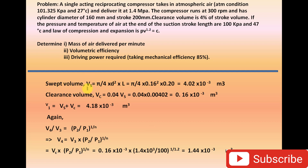The stroke volume Vs equals π/4 times D squared times L. Putting D = 0.16 m and L = 0.2 m and solving, we get Vs = 4.02 × 10⁻³ m³. Clearance volume Vc equals 4% of stroke volume, so Vc = 0.04 × Vs = 0.16 × 10⁻³ m³.